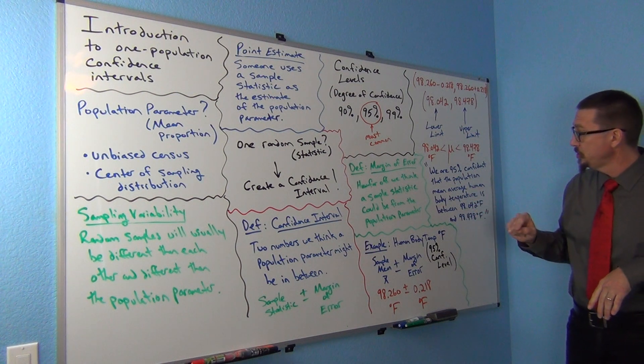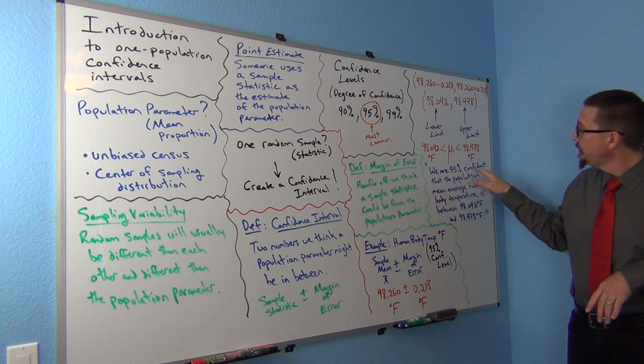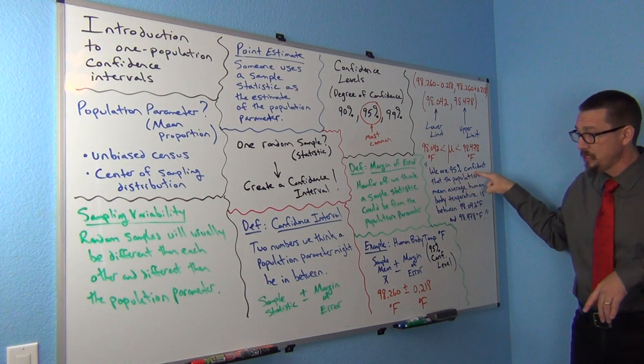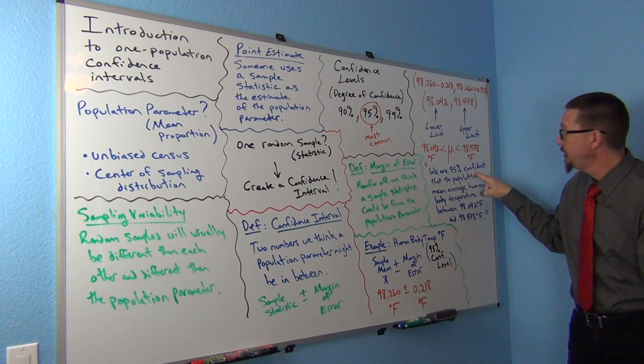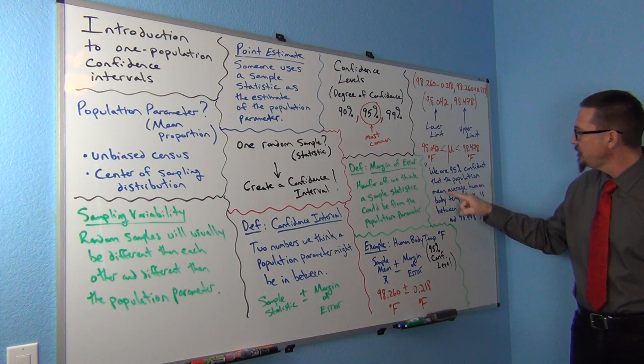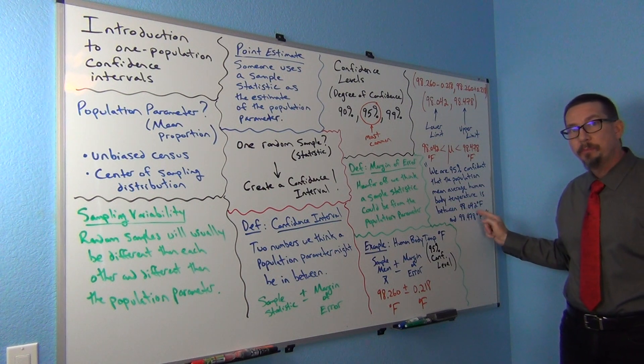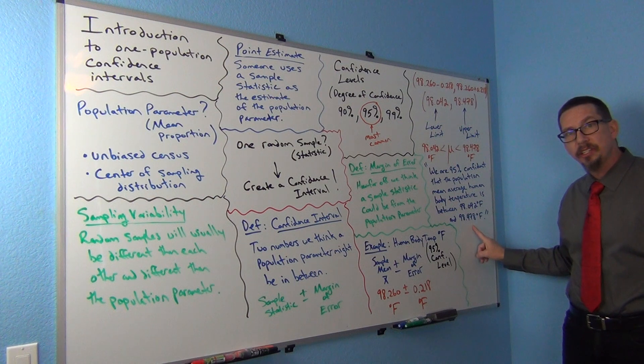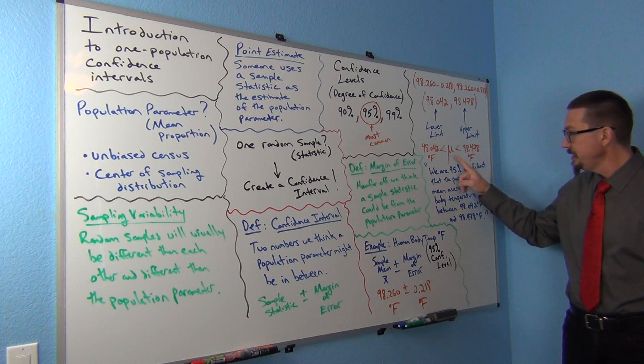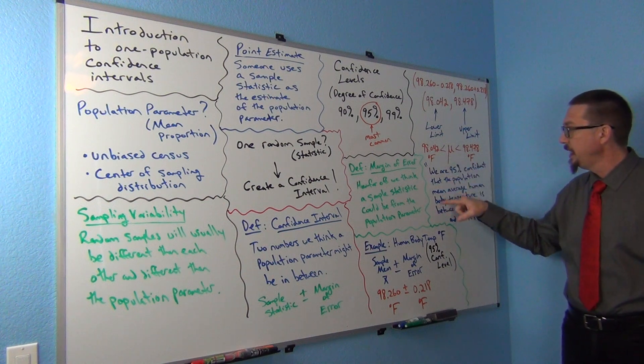Here would be the sentence for the confidence interval, this is called the confidence interval sentence: We are 95% confident - notice I'm referring to what confidence level was used in the calculation - that the population mean average human body temperature is between 98.042 degrees Fahrenheit and 98.478 degrees Fahrenheit. The sentence is very important, that you can write the sentence to explain it.